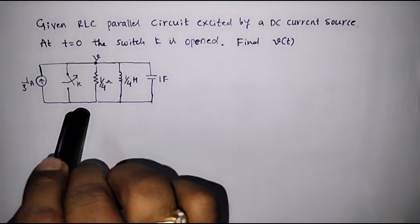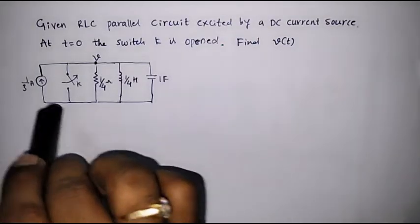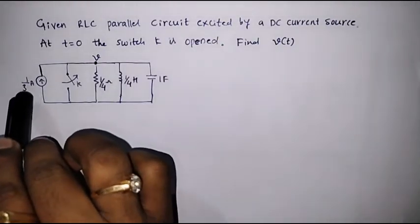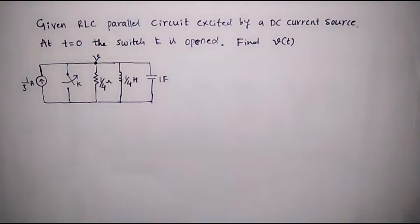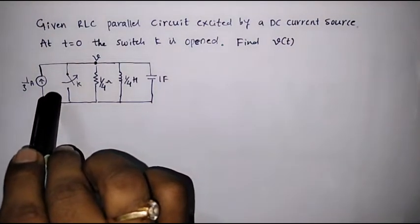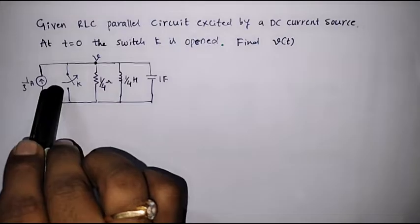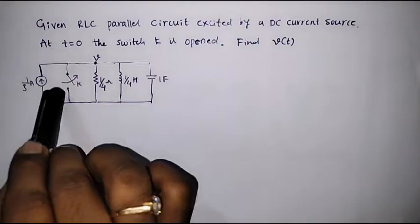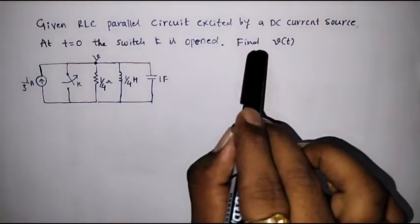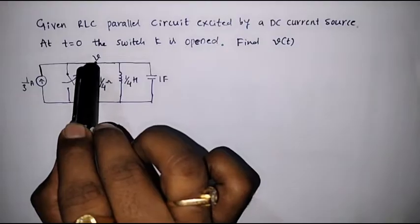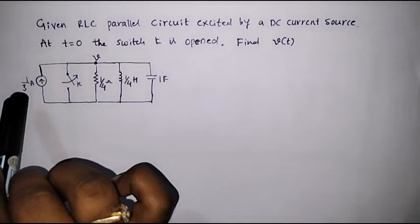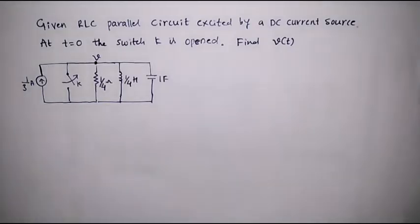This circuit is energized by a current source of magnitude 1 by 3 amps. We have a switch here — look at the direction of the switch, it is about to open. It is said that at t equal to 0, the switch will open. We are supposed to calculate voltage V, which is the node where R, L, and C are connected in parallel with the 1 by 3 current source.